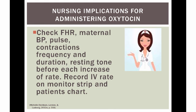Nursing implications for increasing the rate of oxytocin to establish a normal contraction pattern include checking fetal heart rate, maternal blood pressure and pulse, the frequency and duration of contractions, and resting time of the uterus between contractions before increasing the rate. Then record the IV rate on the monitor strip and in the patient's chart.